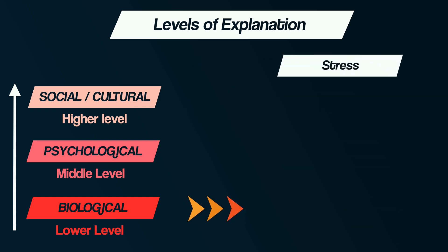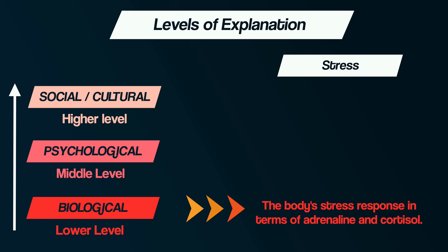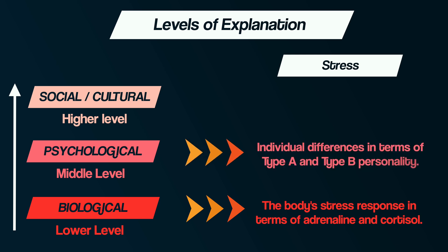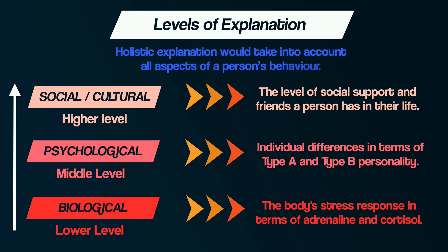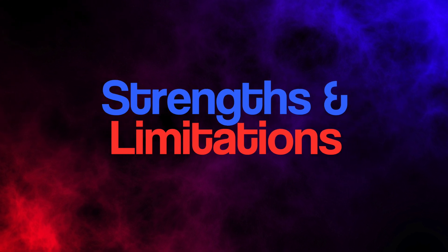Or take stress as an example. At the lower biological level, we could explore the body's stress response in terms of adrenaline and cortisol. At the middle psychological level, we could consider individual differences in terms of Type A and Type B personality. At the higher cultural and social level, we could consider the level of social support and friends a person has in their life. The holistic explanation would take into account all aspects of a person's behavior.